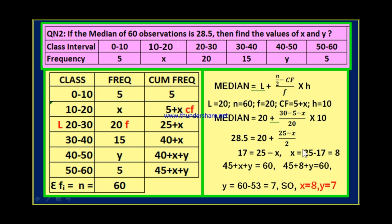After getting x, we know that the sum of all frequencies equals 60. Adding all frequencies gives us 45 plus x plus y equals 60. Substituting x equals 8: 45 plus 8 plus y equals 60, which is 53 plus y equals 60. Therefore y equals 60 minus 53, which is equal to 7. So x value is equal to 8 and y value is equal to 7.